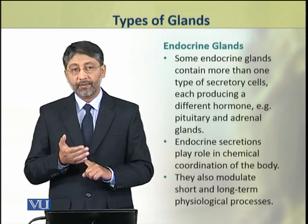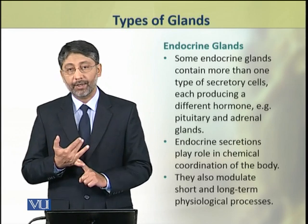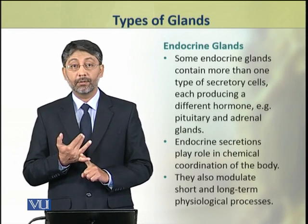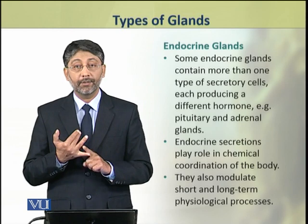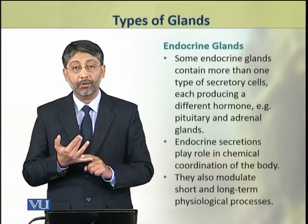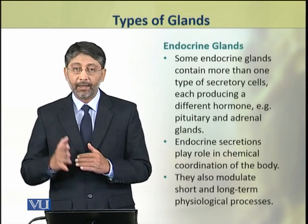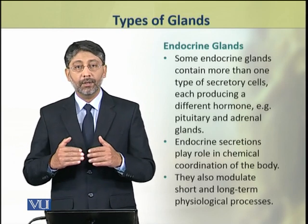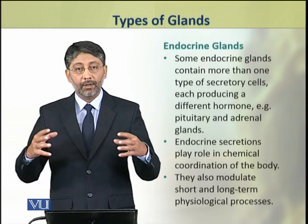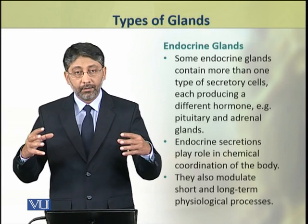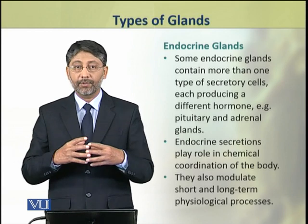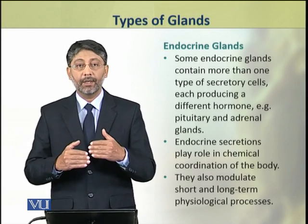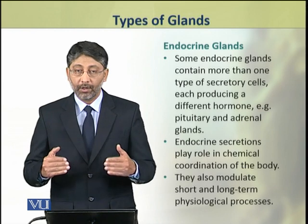For example, the pituitary gland produces at least 9 hormones, and the adrenal glands have many types of secretory cells and produce a large number of hormones.